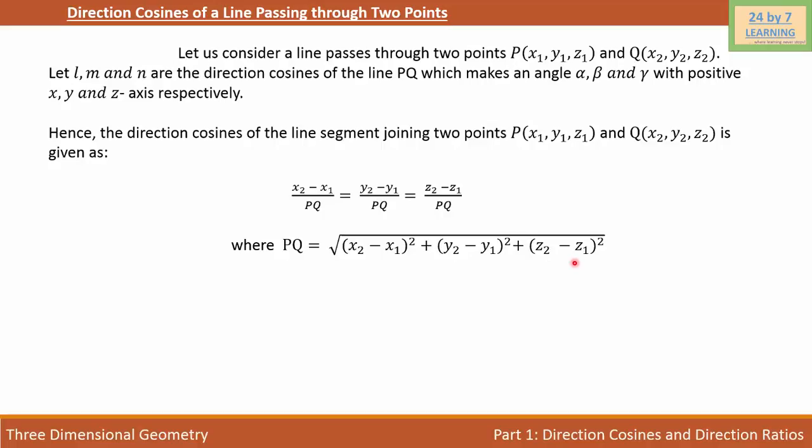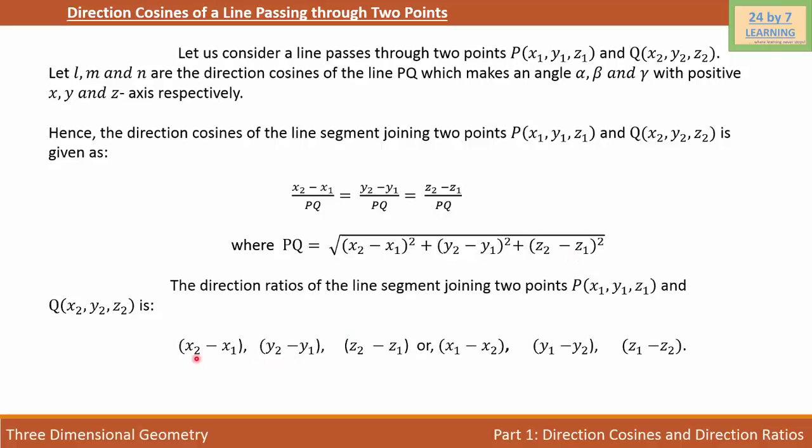If we want to find the direction ratio of a line passing through two points P and Q, then the direction ratio of the line segment is given by separating the X, Y and Z components. We can get (X2 minus X1) as A, (Y2 minus Y1) as B, and (Z2 minus Z1) as C, or (X1 minus X2) as A, (Y1 minus Y2) as B, and (Z1 minus Z2) as C.